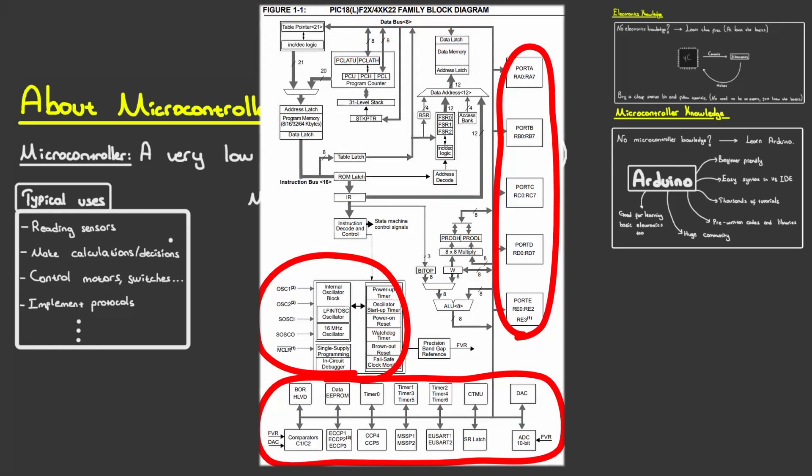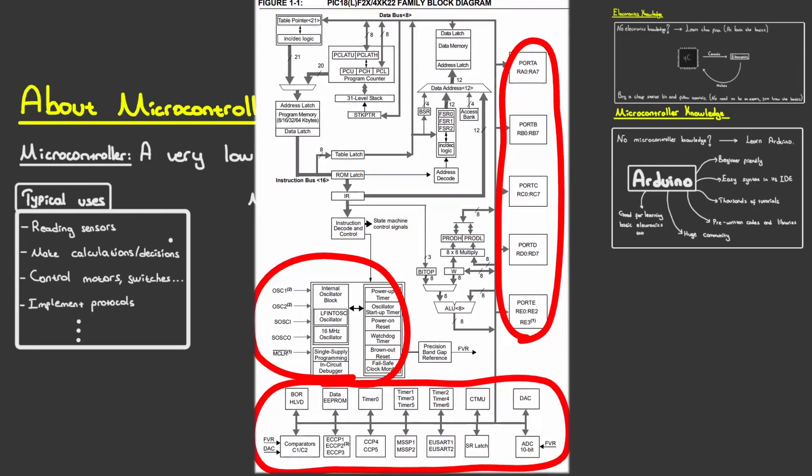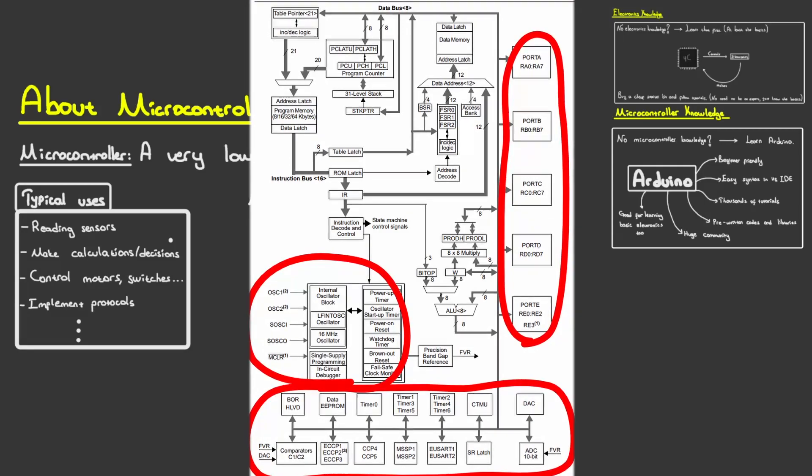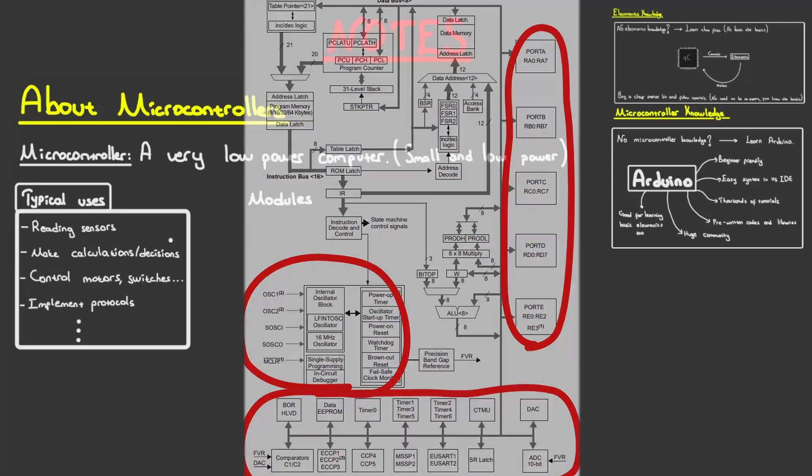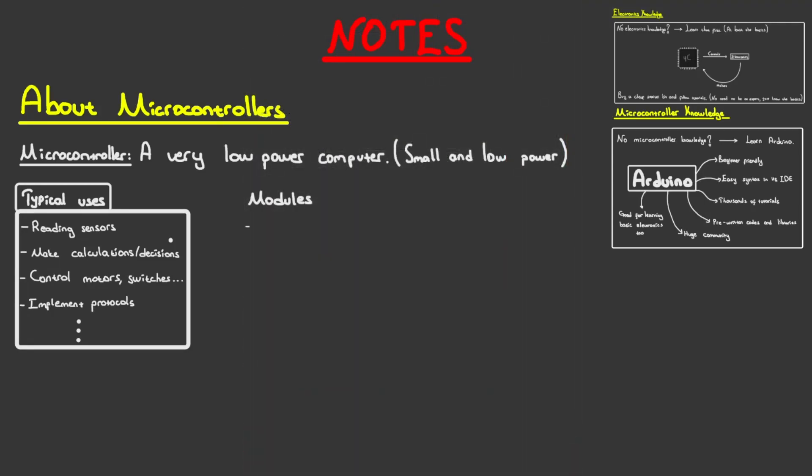Microcontrollers typically have sets of modules inside of them for these tasks, aside from the CPU or memory, directly embedded in their silicon, which also sets them apart from the typical computer, such as timers for precise interval generation, common protocols like UART, SPI, I2C, USB, or CAN,